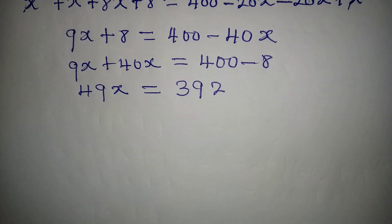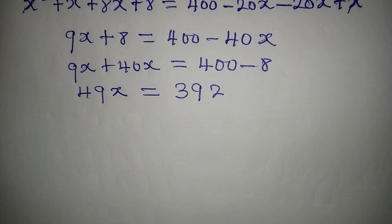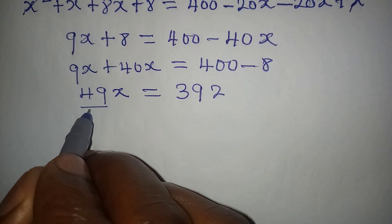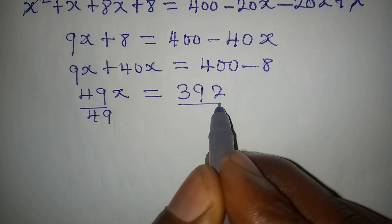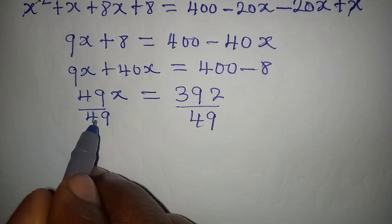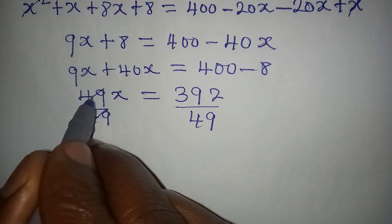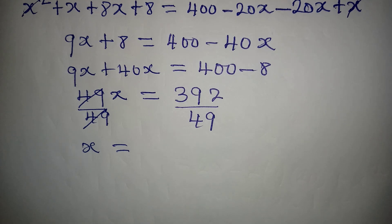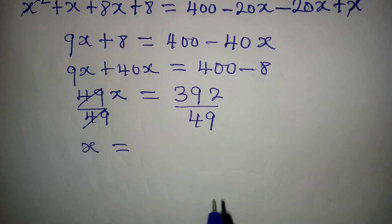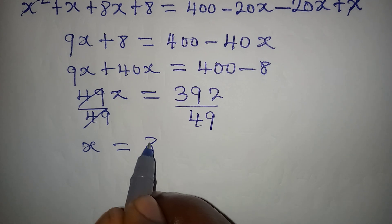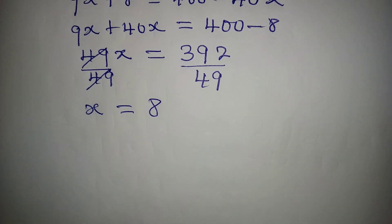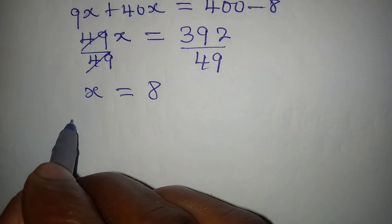The next thing is to divide both sides by 49. This cancels with 49, and x equals 392 divided by 49, which gives us 8. So the value of x is 8.